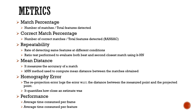The fifth metric is homography error, which logs the reprojection error with respect to the distance between the measured point and the projected point — this quantifies how close an estimate was. The final metric is performance, since it is very important for an object recognition algorithm to compute really fast to achieve real-time performance. We considered average time consumed per frame and average time consumed per feature.